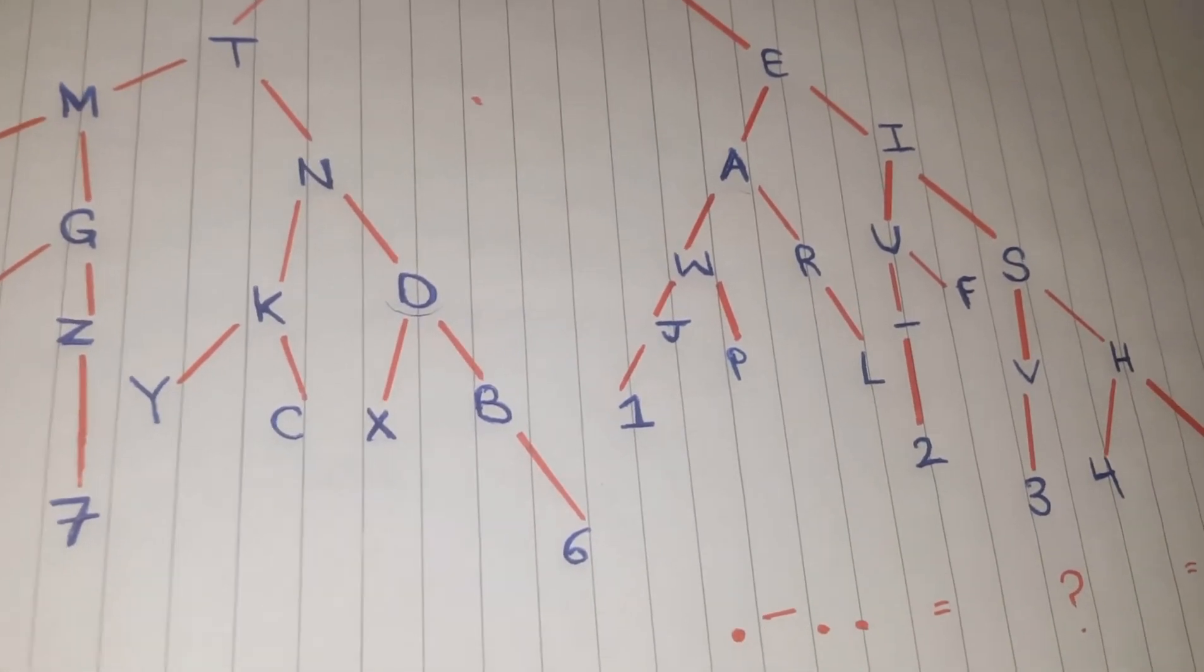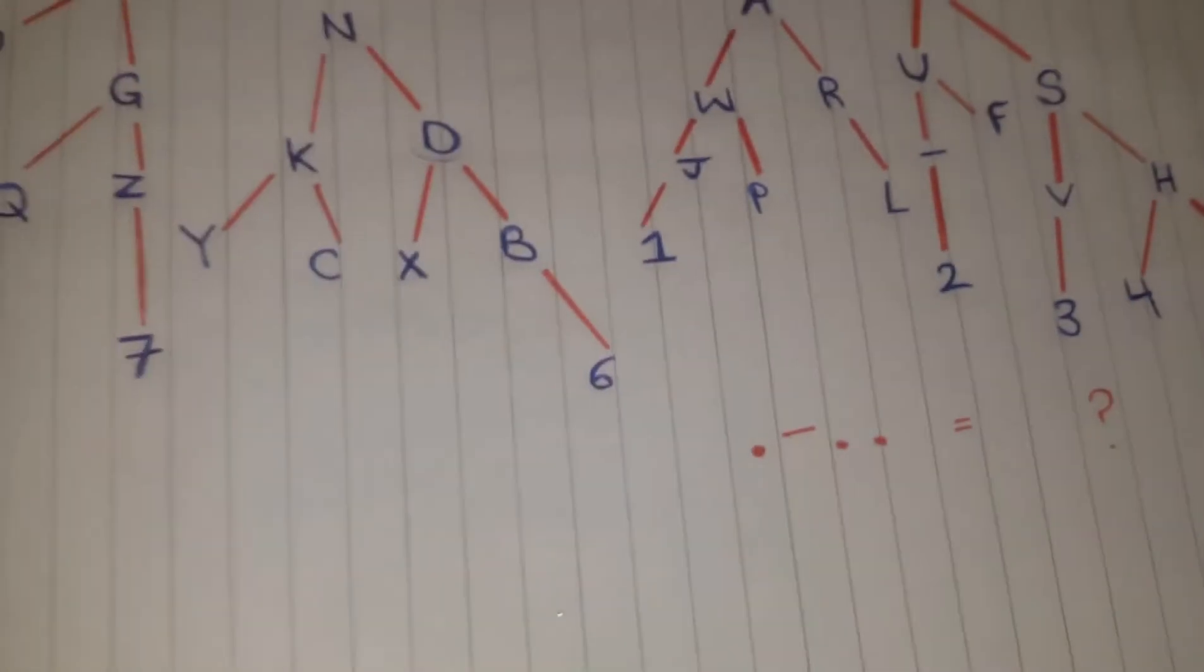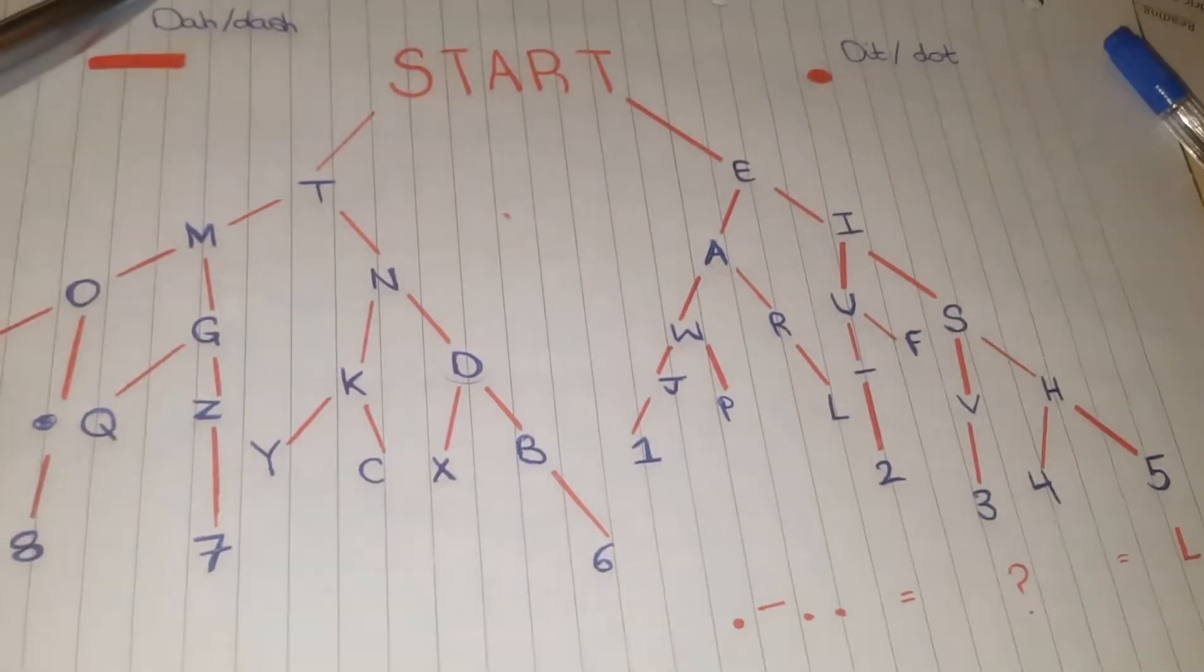So dash dot dot and that takes you to an L. So what does dot dash dot dot equal? Well it's an L.